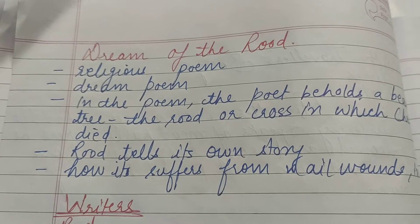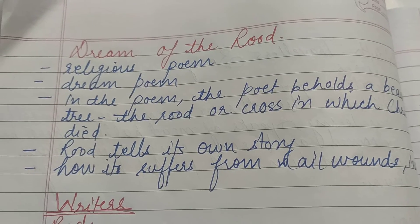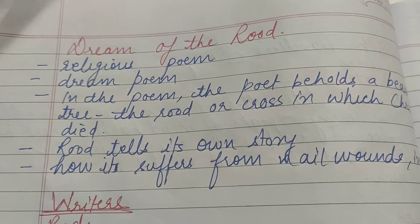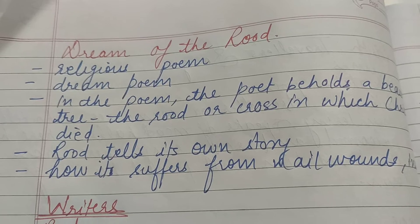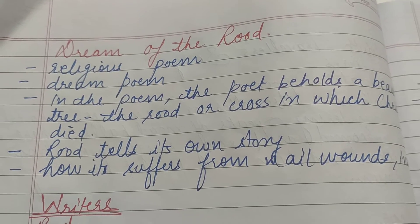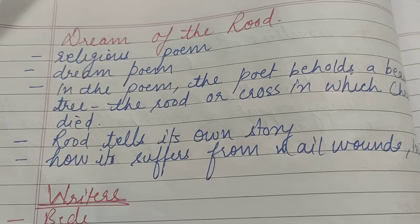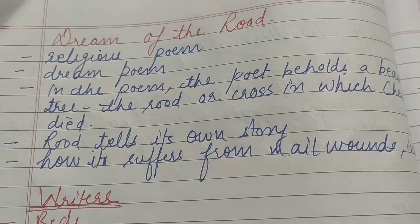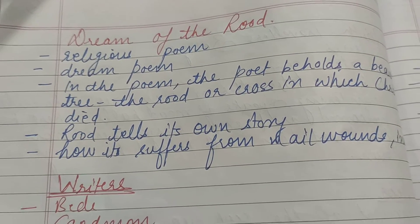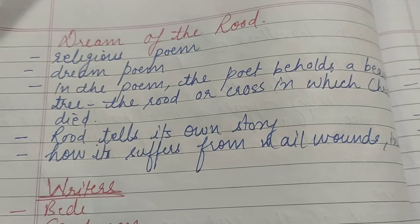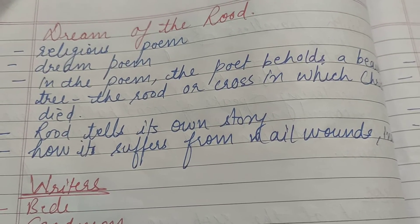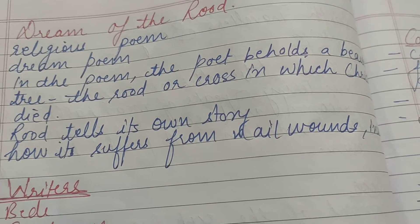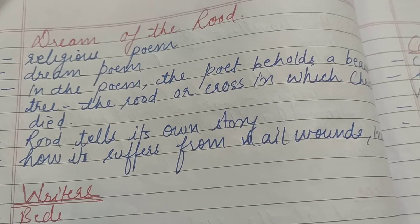Dream of the Rood ek religious poem hai. Ismein ek dream aata hai jisme poet ek cross ko pakad ke rakhta hai — woh cross jisme Christ ki death hui thi. Yeh cross apni ek story bataata hai, bataata hai ki kaise jab Christ ki death ho rahi hoti hai, is cross mein bhi nails ke wounds aate hain, nails ke zakhm aate hain, kaise is cross ne bhi Christ ki tarah insult sahi hai. So this is about Dream of the Rood.